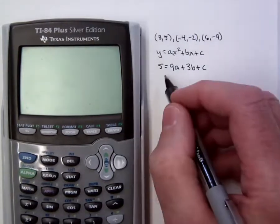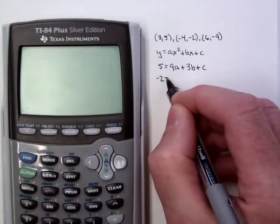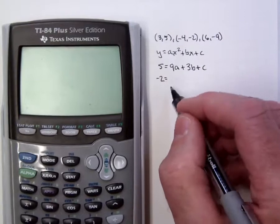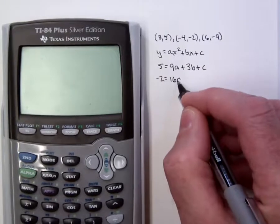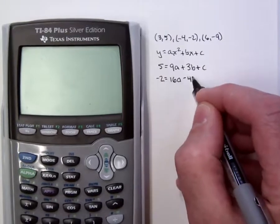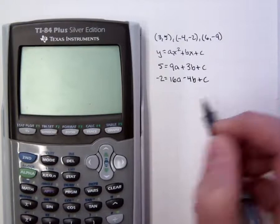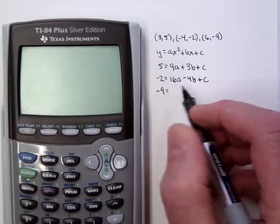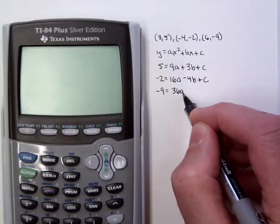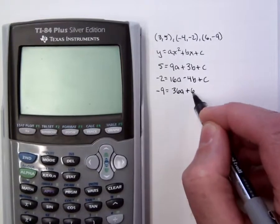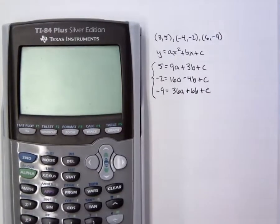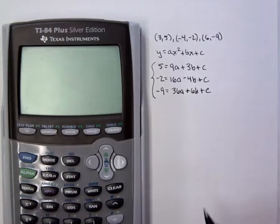And my second ordered pair will give me the equation -2 equal to -4 quantity squared, which is 16 times a minus 4b plus c. And then finally, the third equation will be -9 equal to 36a plus 6b plus c. And if we can solve this system for the three variables a, b, and c, we'll have our model.